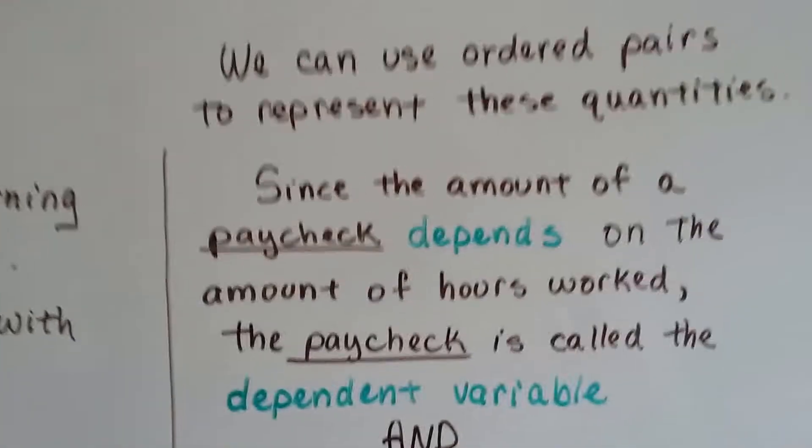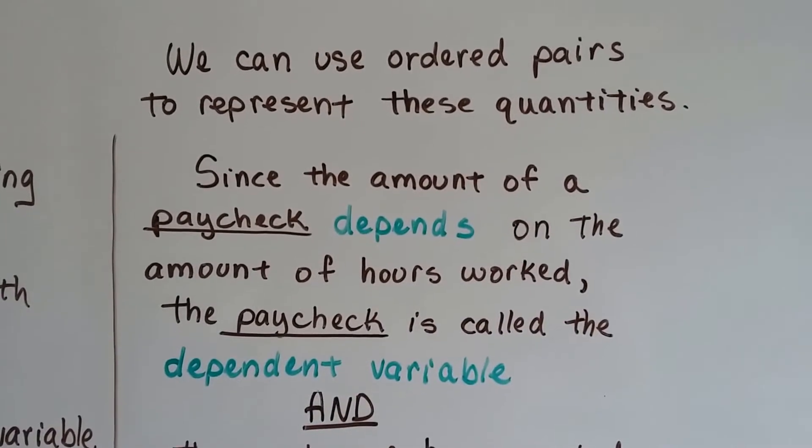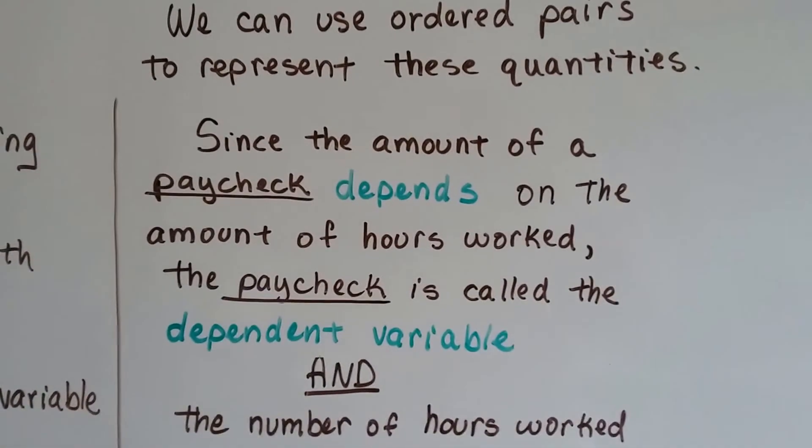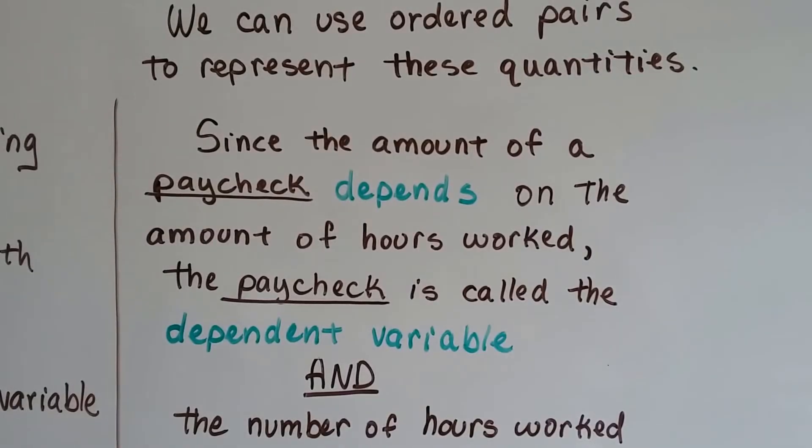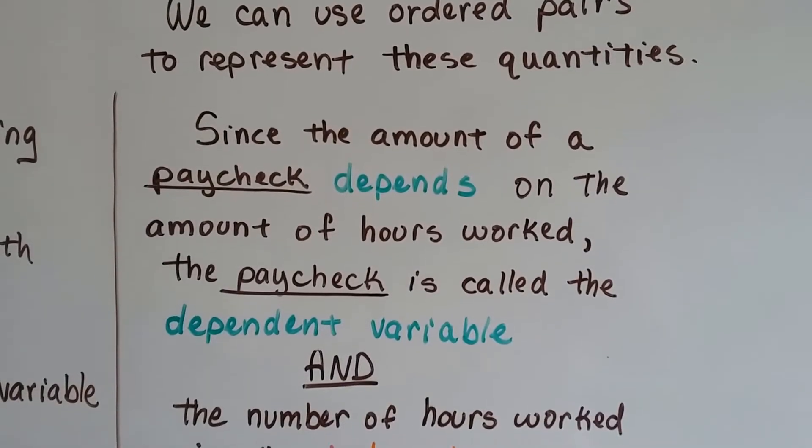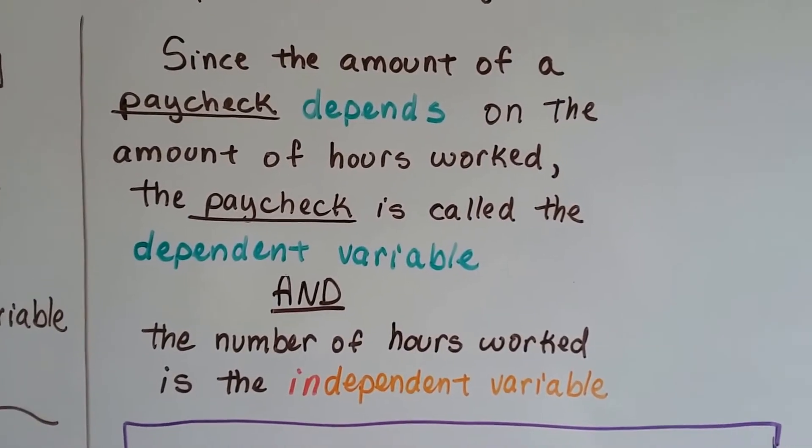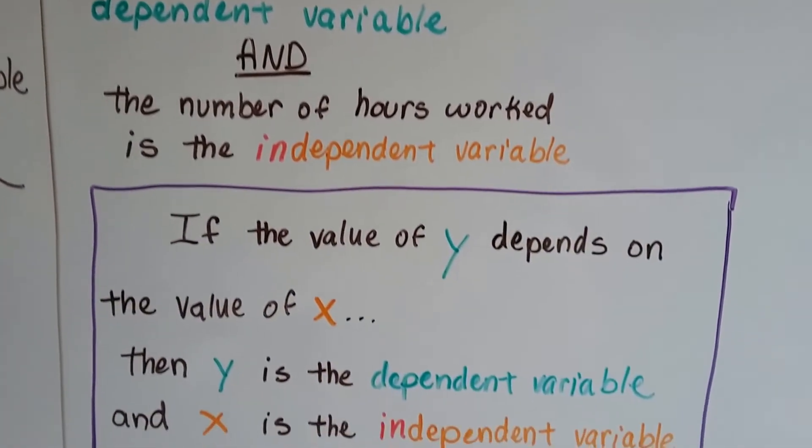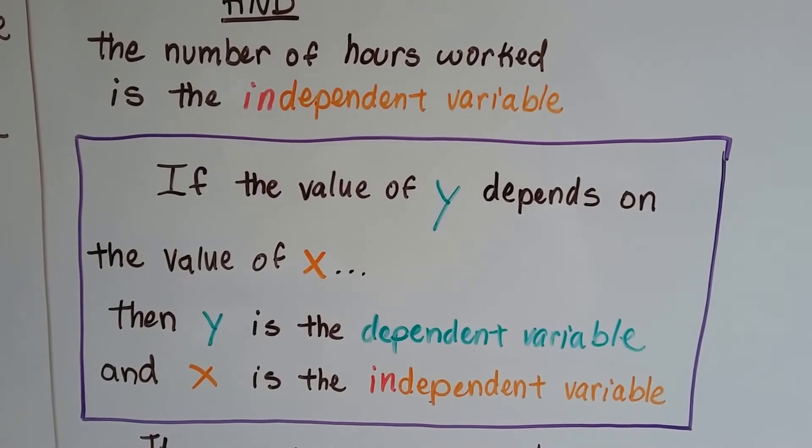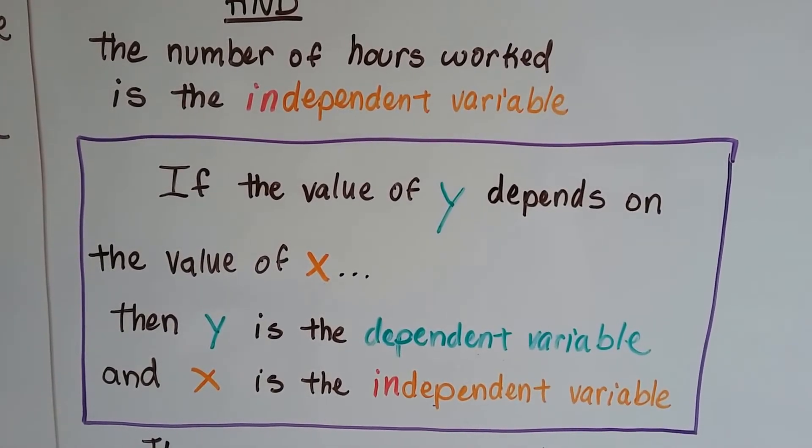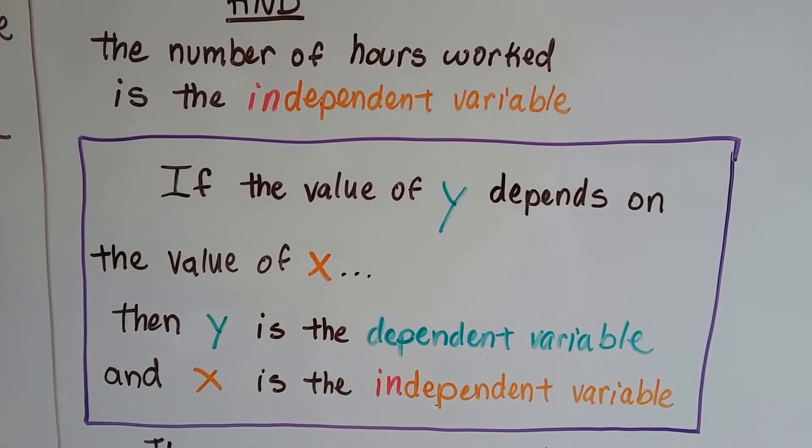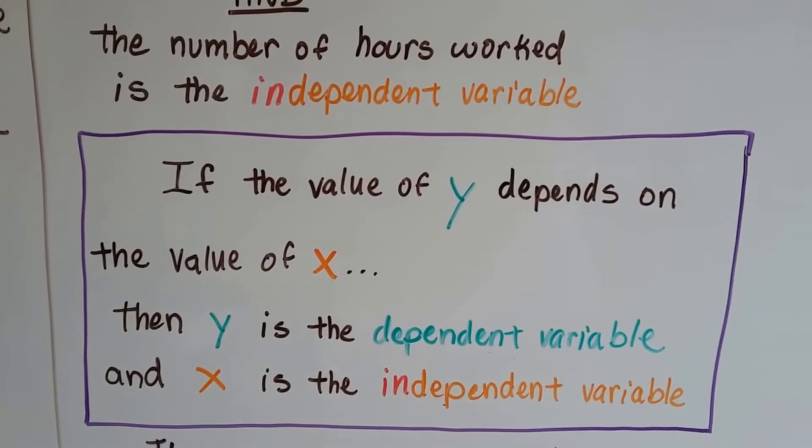We can use ordered pairs to represent these quantities, and since the amount of a paycheck depends on an amount of hours worked, the paycheck is called the dependent variable. And the number of hours worked is the independent variable. If the value of y depends on the value of x, then y is the dependent variable, and x is the independent variable.